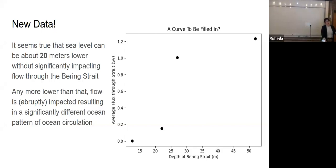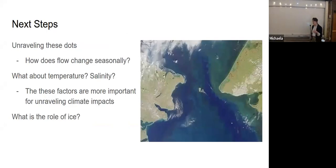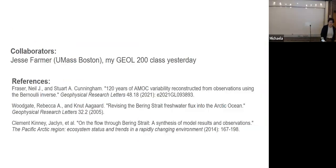That's where I'll leave it. This is my conclusion, but I have a couple next steps. I'd like to unravel these dots. We have about a year of data within each of those dots. It'd be interesting to look at the seasonality of the flow. Also, temperature, salinity. How do those things change with the flux? Those two factors are actually quite a bit more important. And then also, what's the role of ice in this? I'm going to thank my collaborators, Jesse Farmer at UMass Boston, my Geology 200 class who helped me yesterday, and these are some references for you. I'll take any questions.